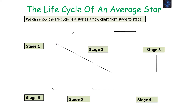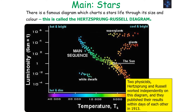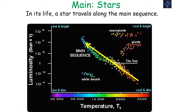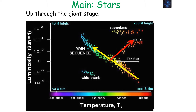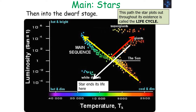We can show the life cycle of a star as a flow chart from stage to stage. There is a famous diagram which charts a star's life through its size and colour, called the Hertzsprung-Russell diagram. Two physicists, Hertzsprung and Russell, worked independently on this diagram and published their results within days of each other in 1913, so both were given credit. A star starts its life on the diagram, travels along the main sequence, then goes up into the giant stage, and comes back down into the dwarf stage. This path is called the life cycle.